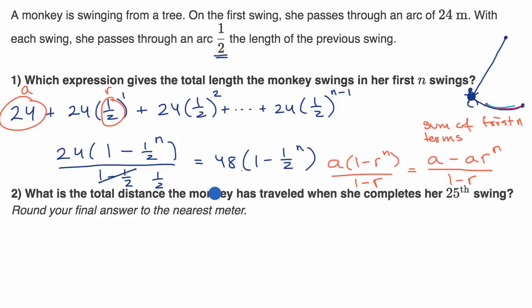Now the second part, they say what is the total distance the monkey has traveled when she completes her 25th swing? And they say round your final answer the nearest meter. So pause this video and see if you can work that out.